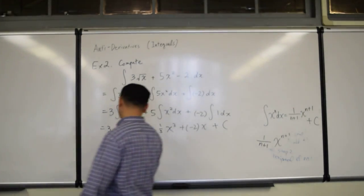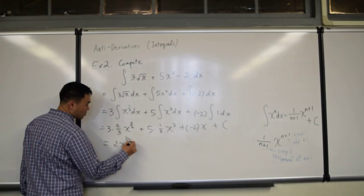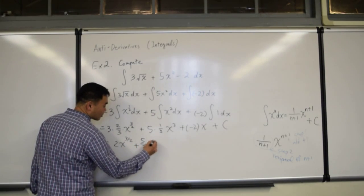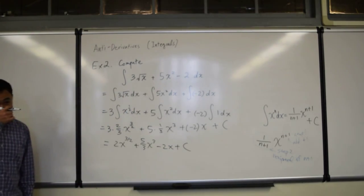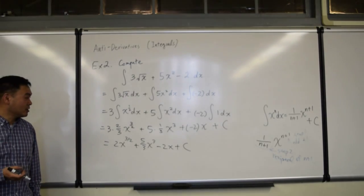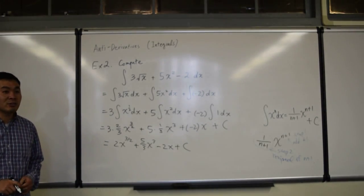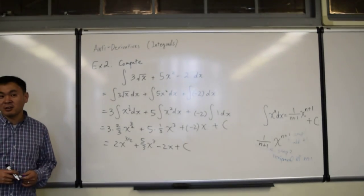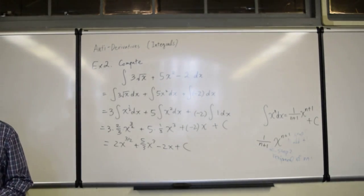Let's simplify. Three, three cancels, and you get two x three over two, plus five over three x cubed, minus two x, plus c. So, that is the answer. That's how you use linearity and the power rule together. That already covers a lot of integrals. You can integrate many things by using this power rule and linearity.